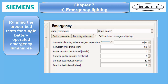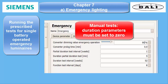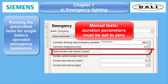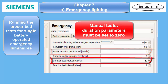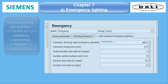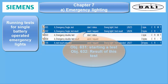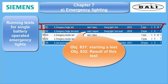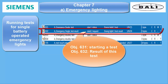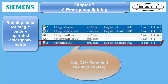However, if the facility management wants to run these tests manually, the automatic function can be switched off in the parameter settings — the duration test parameters must both be set to zero. For manual test triggering, two communication objects are available: the individual simple test control object (here number 631, 1 byte) with the result object (here number 632, 3 bytes large), and the extended test object 735 for channel A, which comprises 10 bytes.